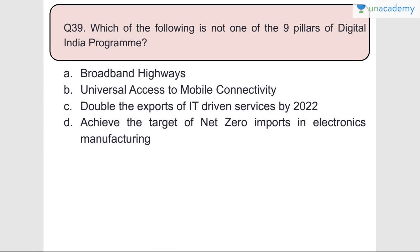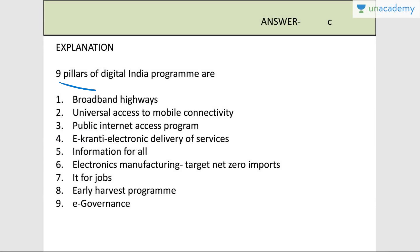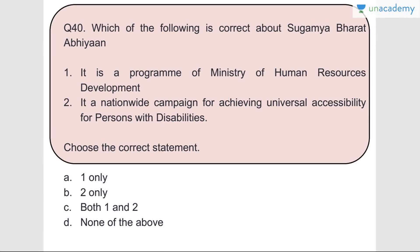Question number thirty-nine: Which of the following is not one of the nine pillars of the Digital India program? Answer is C - double the exports of IT-driven services by 2022 is not a pillar. The nine pillars of Digital India are: broadband highways, universal access to mobile connectivity, public internet access program, e-Kranti - electronic delivery of services, information for all, electronics manufacturing targeting net zero imports, IT for jobs, early harvest program, and e-governance.